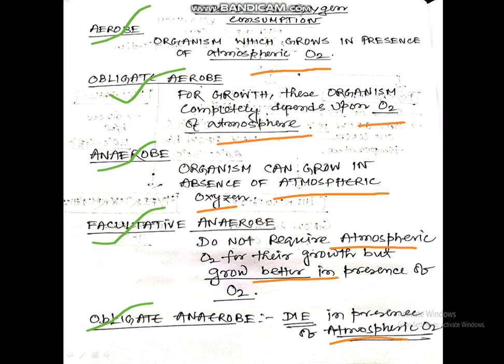Based on oxygen consumption, microbes are classified as: Aerobes — organisms that grow in the presence of atmospheric oxygen. Obligate aerobes — completely depend on atmospheric oxygen for growth. Anaerobes — organisms that grow in the absence of atmospheric oxygen. Facultative anaerobes — do not require atmospheric oxygen but grow better in its presence. Obligate anaerobes — die in the presence of atmospheric oxygen.